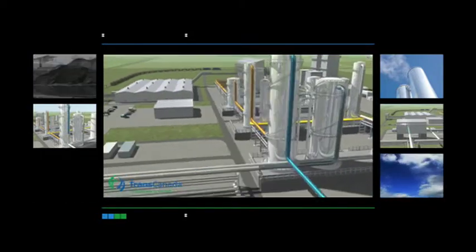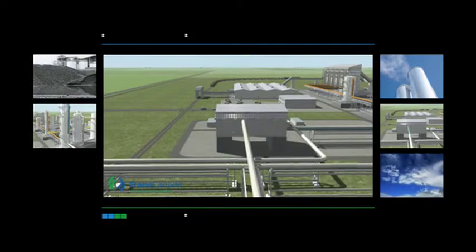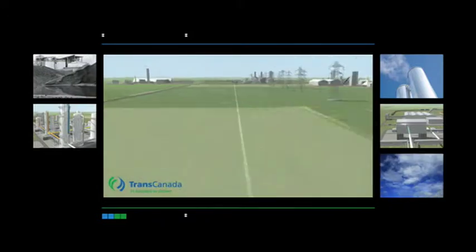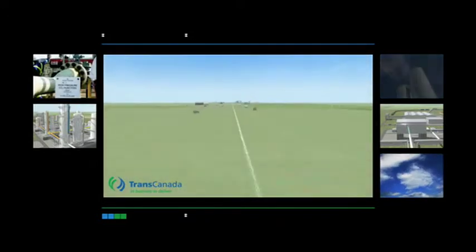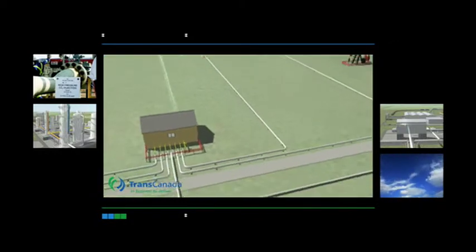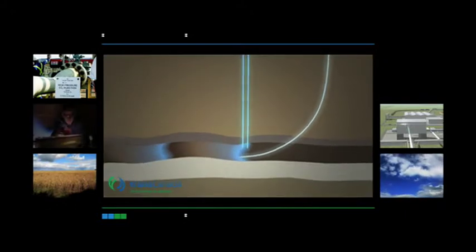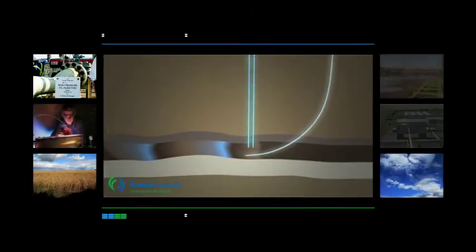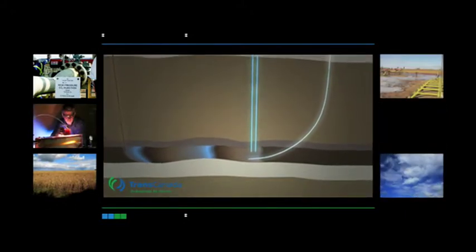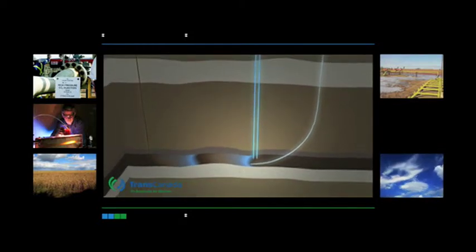Meanwhile, some of the carbon dioxide will be sent to SaskFurco, while the majority is compressed and sent to nearby oil fields and injected deep underground for enhanced oil recovery. This process enables previously unrecoverable oil resources to be produced, while the carbon dioxide remains behind, permanently stored.